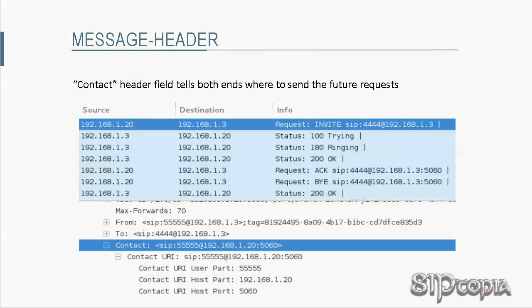The Contact header field tells both ends of a SIP communication where to send future requests. For example, when Tarzan called Jane, the INVITE message from Tarzan included Tarzan's extension as well as his IP address. If the entity between Tarzan and Jane was a SIP proxy, this Contact header field would be relayed to Jane, and as a result, subsequent requests — including the ACK and BYE messages — could be exchanged directly between the two endpoints.